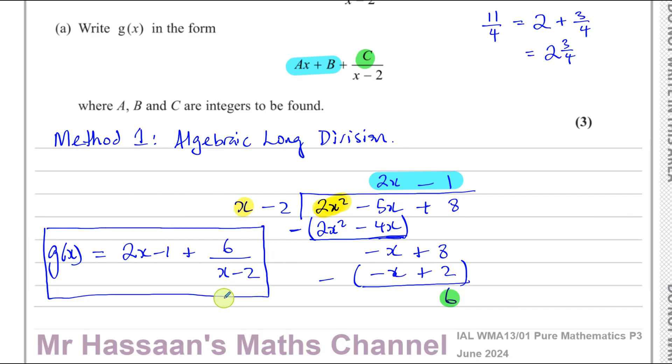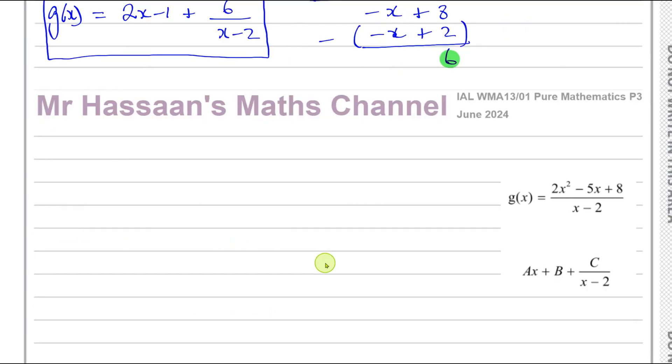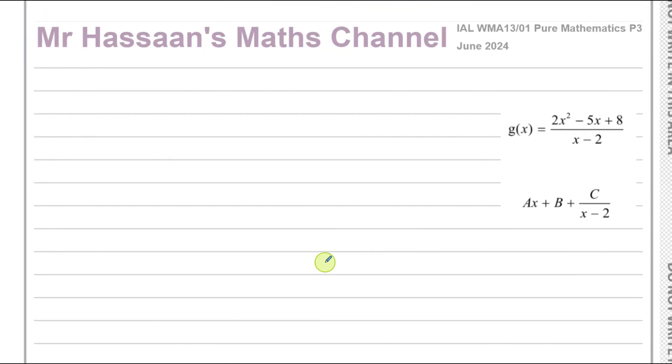So that's basically the method that you would use. Most people would use this method, and that's fine. Now there's another method we can also use, which I'm going to show you as well, and this is kind of like called comparing coefficients.